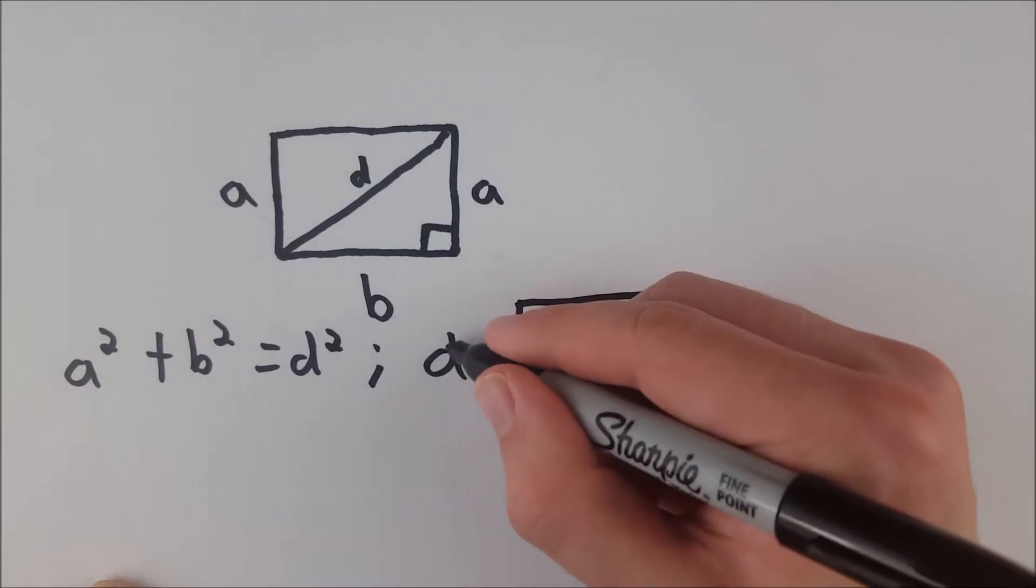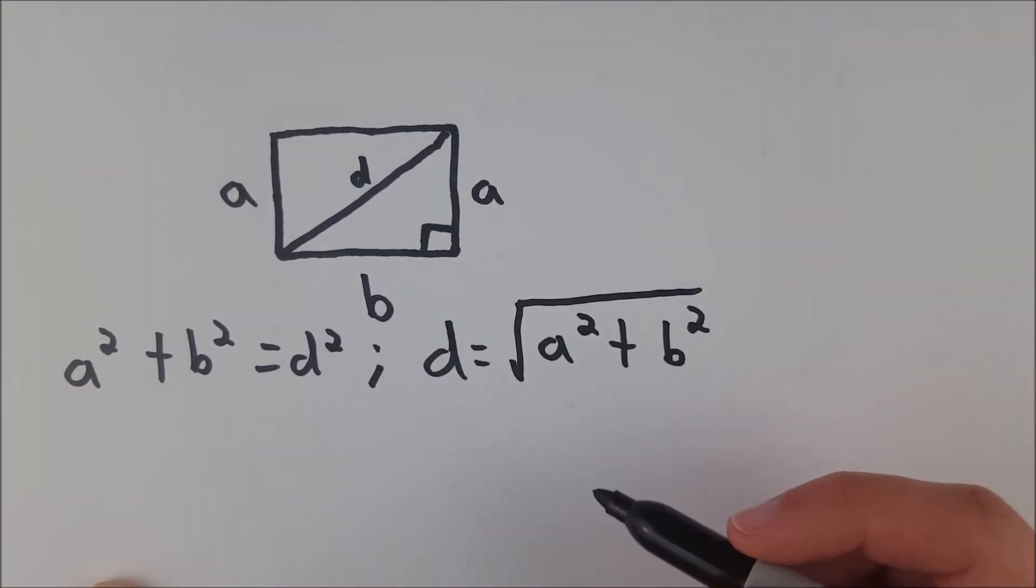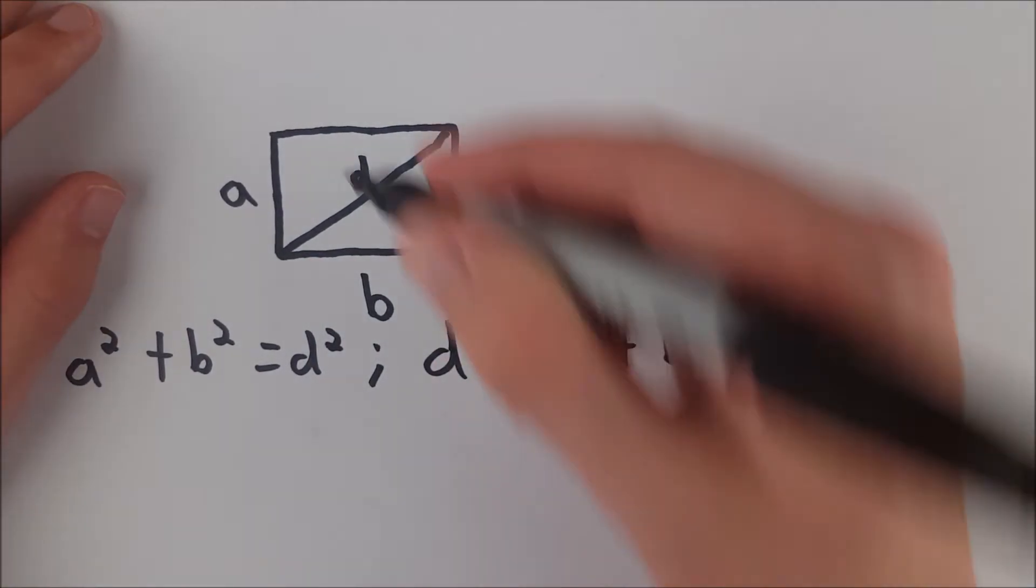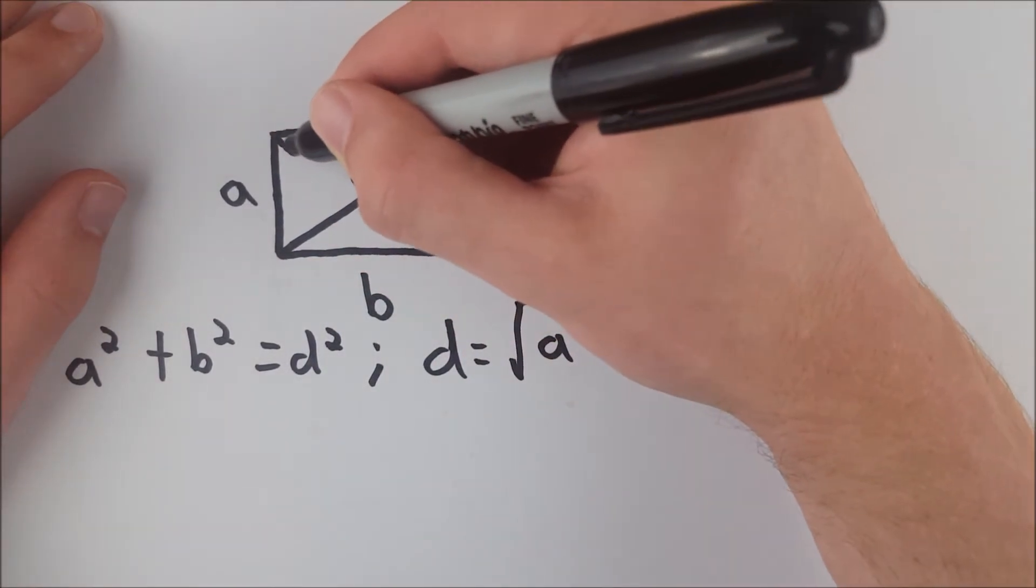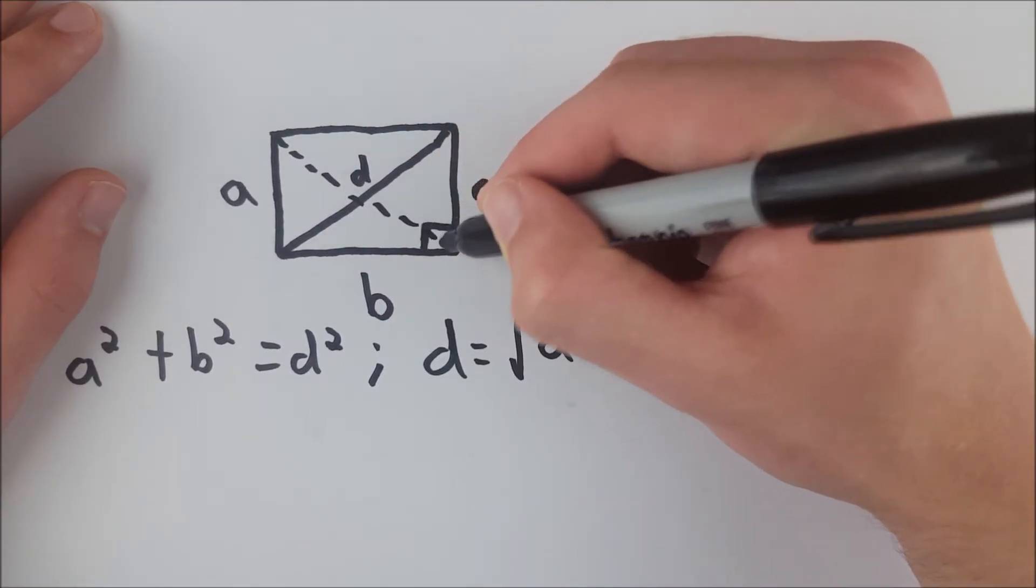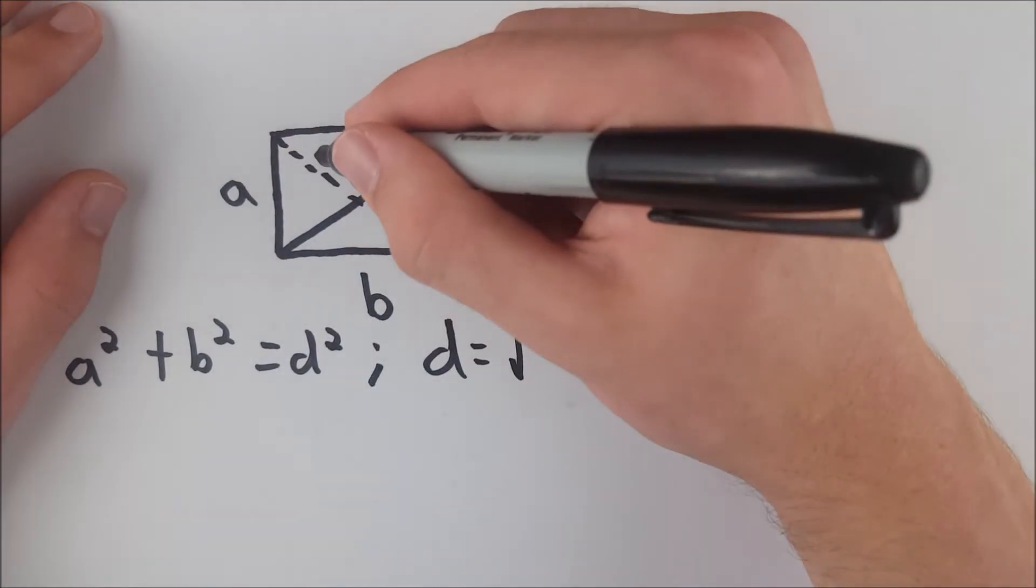So now we have an expression for the length of the first diagonal, and let's call the second diagonal d1, and I'll write this in here, sort of with a dotted line, just so things don't get too messy.